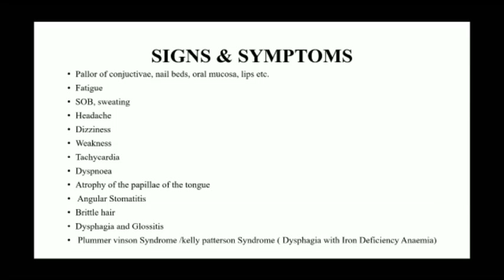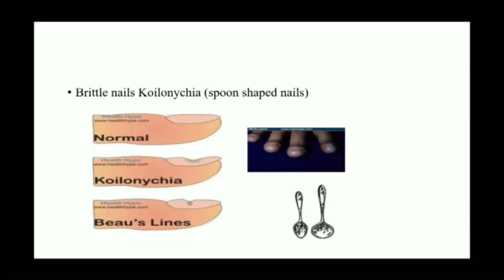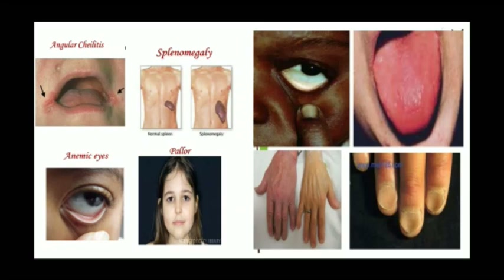Additional signs include angular stomatitis, glossitis, plummer-vinson syndrome, koilonychia (spoon-shaped nails), splenomegaly, and pallor of the conjunctiva visible on eye examination.